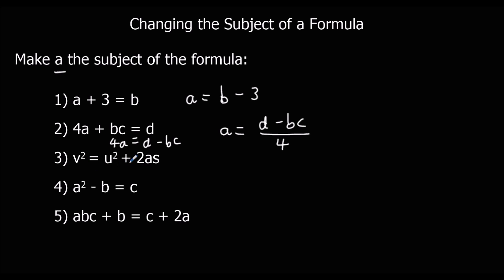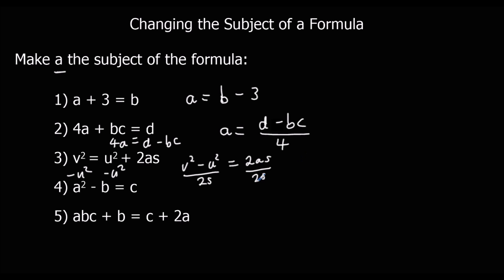For the third question: V squared equals U squared plus 2AS. I want to take away the U squared first, so V squared minus U squared equals 2AS. This A is multiplied by both 2 and S, so I need to divide by 2S to get A by itself. The 2S cancels, leaving A equals V squared minus U squared over 2S. That's the final answer.